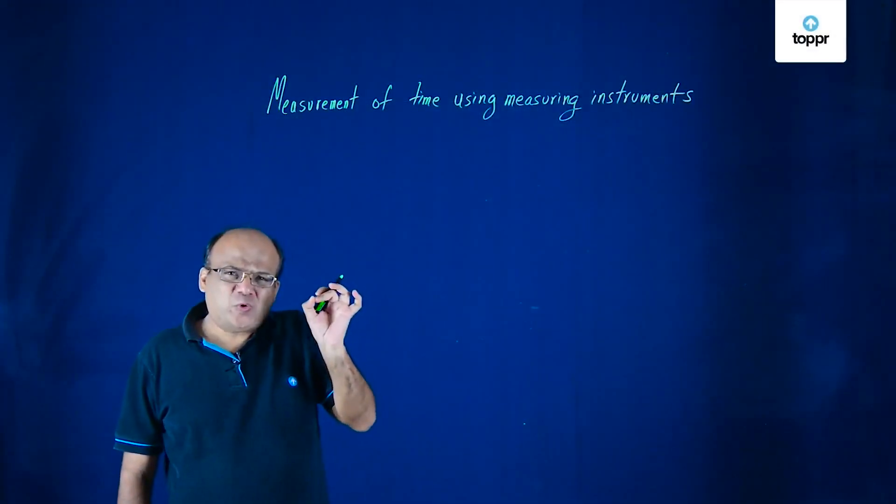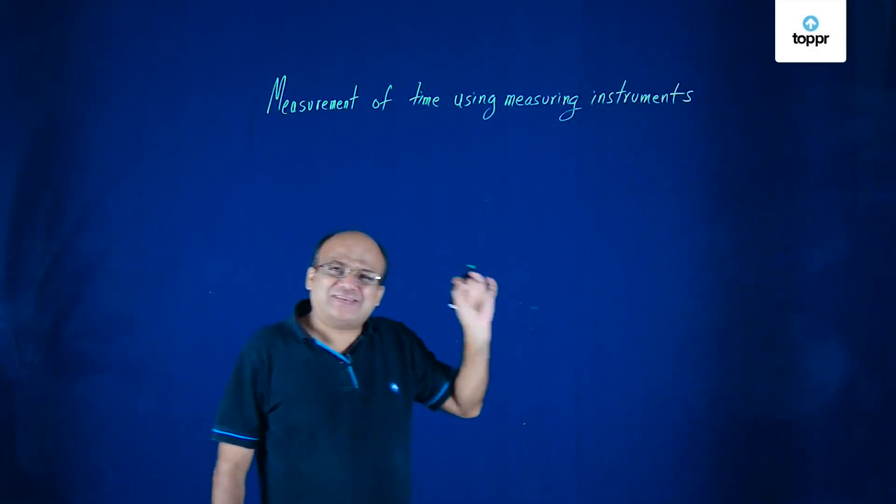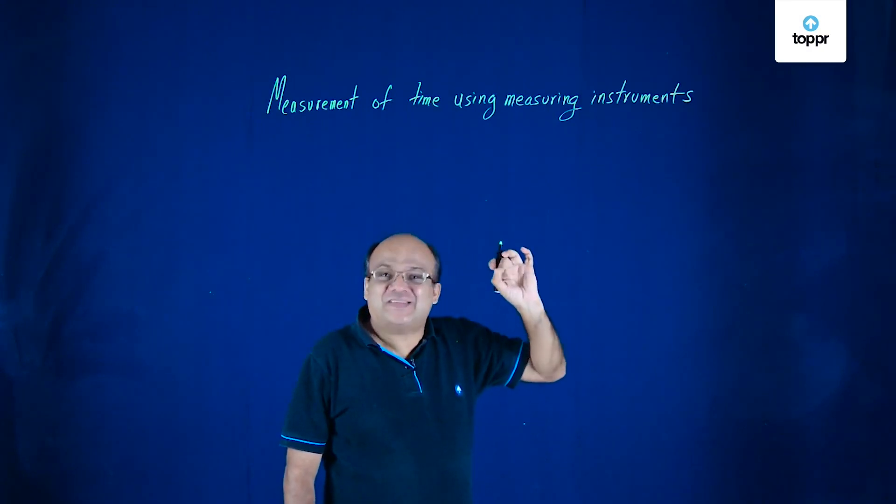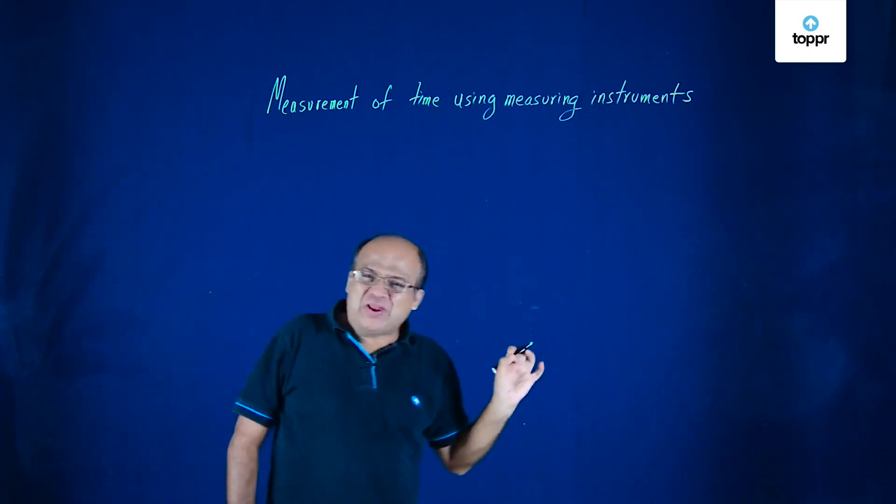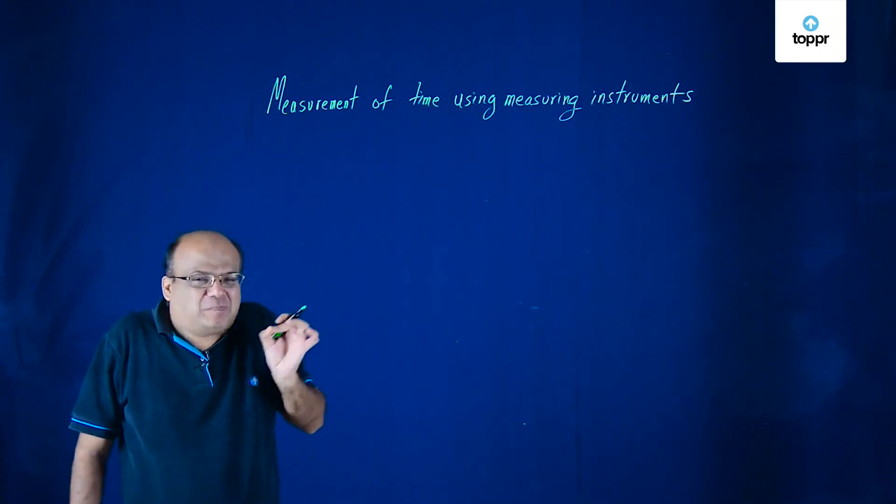Now we are going to look at how we measure time using measuring instruments. One way of measuring time is using simple pendulum.